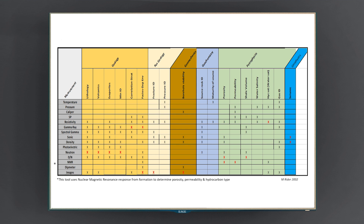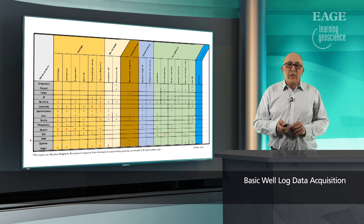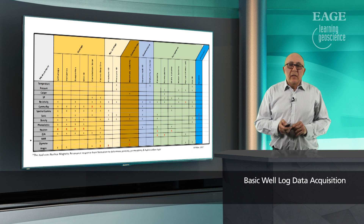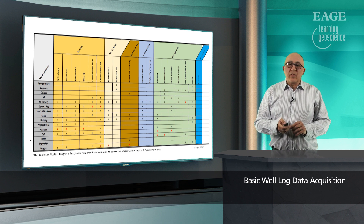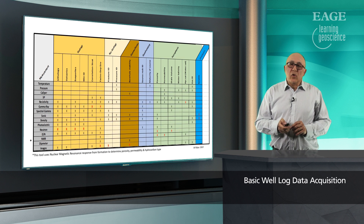These are the measurements against uses. This table is very useful because it shows, on the left-hand side, the different mnemonics being taken from the data — things like resistivity, porosity, permeability, and neutrons — against all the disciplines that actually use this data. So geology, reservoir geology, petrophysics, and geophysics all use this data.